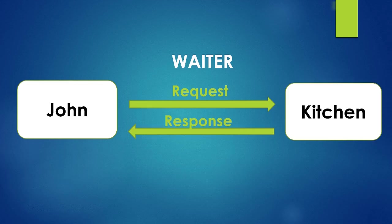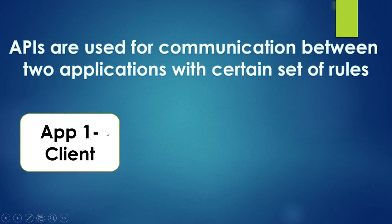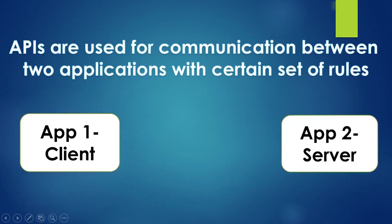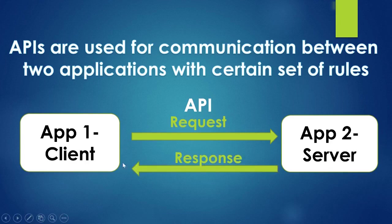APIs work in a very similar way. APIs are used for communication between two applications with a certain set of rules. There is one application — application one — as client, and there is application two as server. These two applications want to communicate with each other, and they can do so with the help of APIs. The API will take the request from the client, send the request to the server, and once the request is processed, the API will send the response back to the client. That is how the API works.